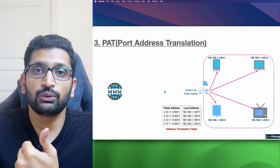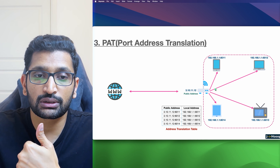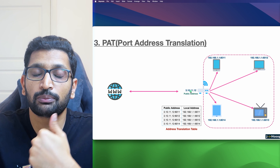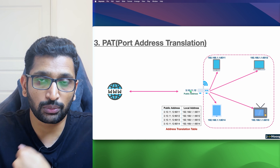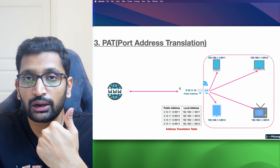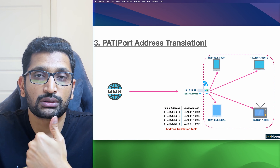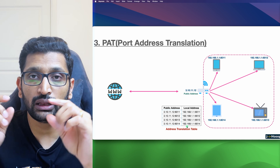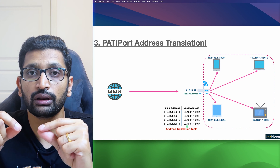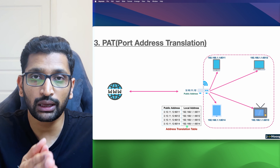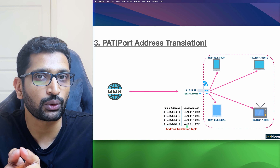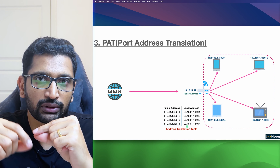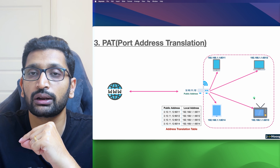When someone tries to access a service running on one of the devices, they access the public IP address along with the port. The address translation table is then looked up to find the mapping between the public IP address and port to the private IP address and port, and once the entry is found the request is forwarded to the respective device.